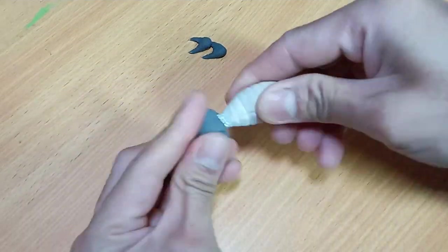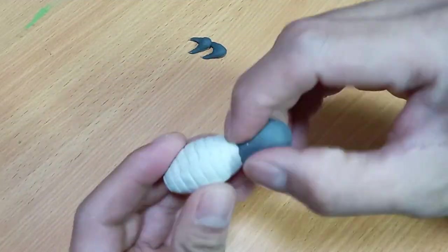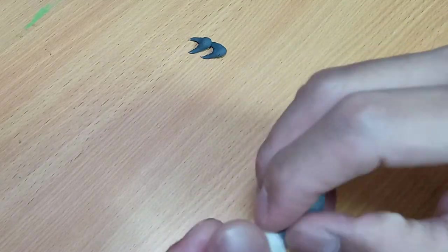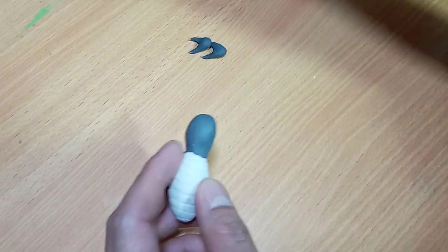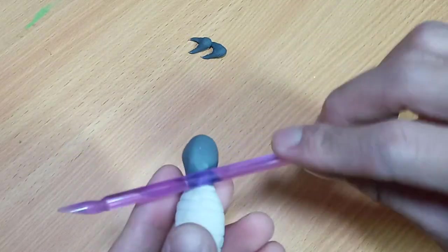After baking the abdomen and the jaws, we can now sculpt the head. For the head, I use again the combination of Sculpey Original and black Primo.